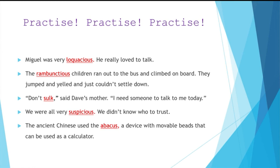Don't sulk, said Dave's mother. I need someone to talk to me today — please don't sulk, don't go in a bad mood, don't go quiet on me today. I need somebody who is in a talkative mood. Then: we were all very suspicious — we didn't know who to trust. So if I am suspicious, it means I don't think I can trust you. The ancient Chinese used the abacus, a device with movable beads that can be used as a calculator. So the writer has given us the definition right there and then.